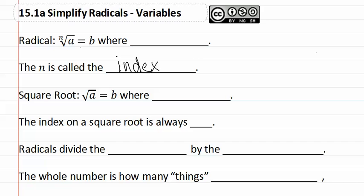This can be rewritten as b to the n equals a. When we have a square root, it can be written as b squared equals a. This is because it has an index that isn't shown, which is two. So the index on the square root is always two.